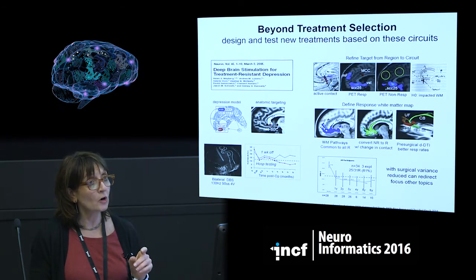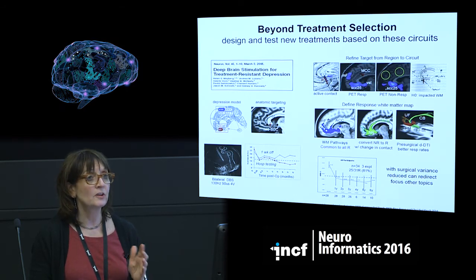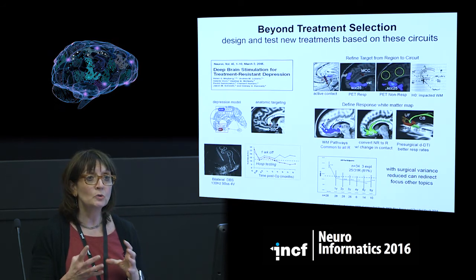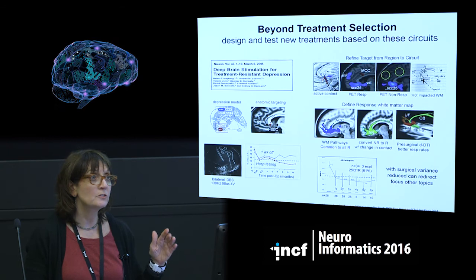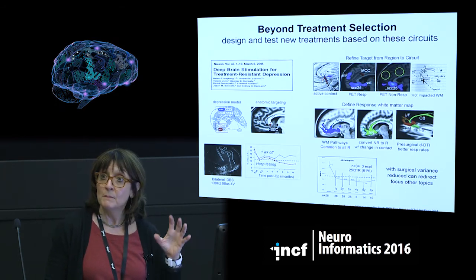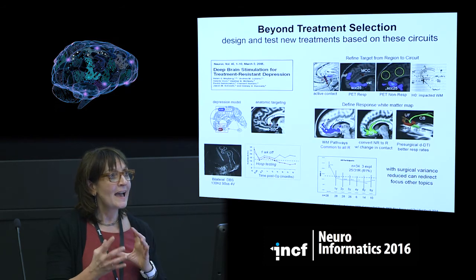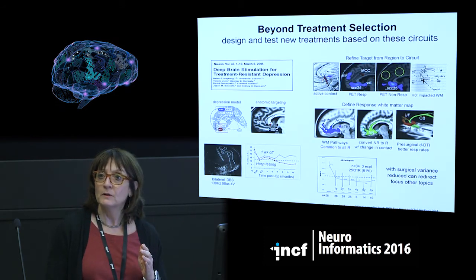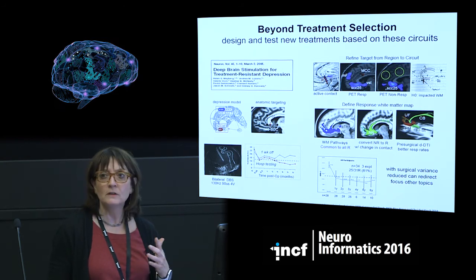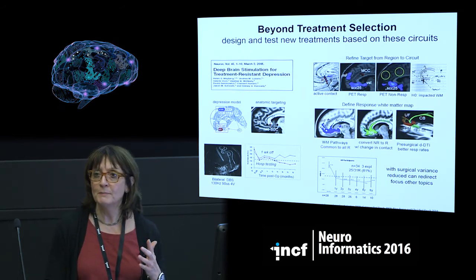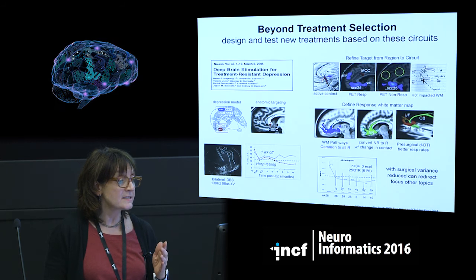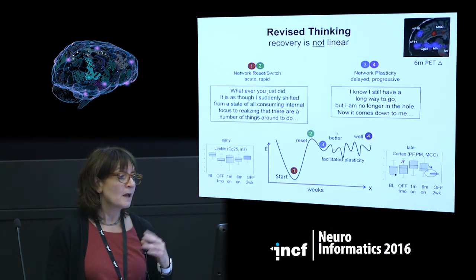We've prospectively targeted that blueprint, never changed the location, stimulated for six months, and have a 75% response rate instead of a 40% response rate — controlling one variable, never getting into tuning the parameter space. Now we can address the parameter space because we no longer have to worry about location. We've optimized that at the current level of precision. With higher resolution scans, maybe we can do better — we know that's necessary, but we don't know if it's sufficient.